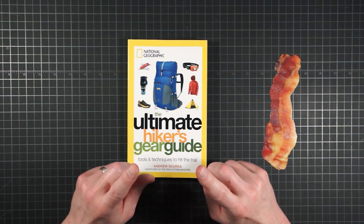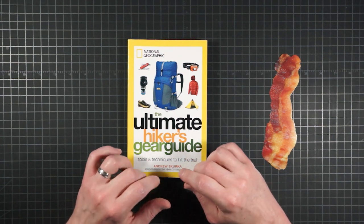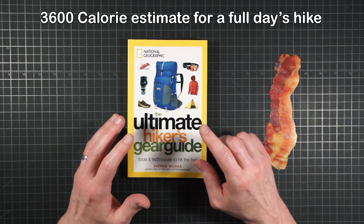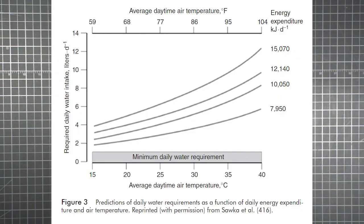He does note that beginners and people who don't charge as hard as he does will have lower burn levels. But for our purposes here, I'm going to take 3,600 calories as a conservative estimate of what a full day's hiking will expend. And on this graph, that means using the top curve.